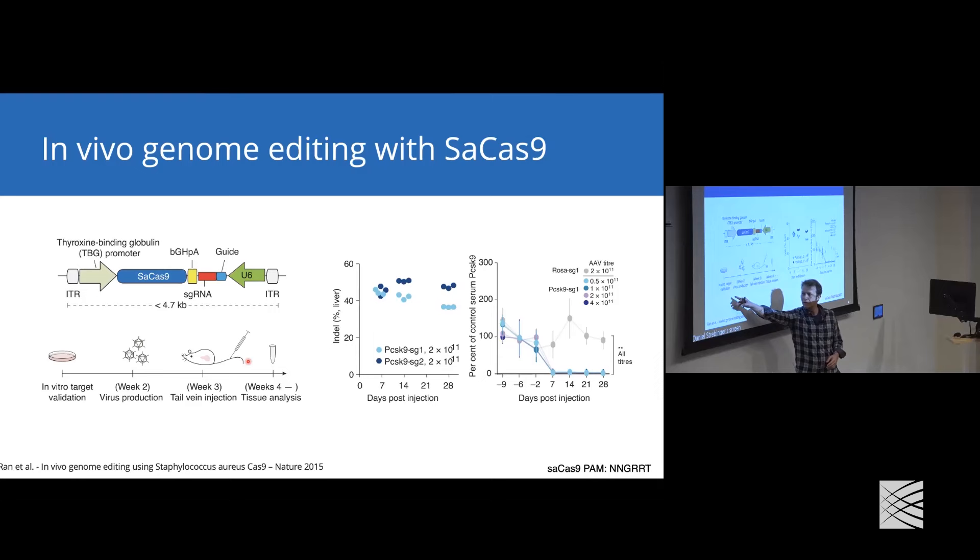People validated that it works in cells in a dish, produced virus targeting the PCSK9 gene in mice, injected this into mice, and analyzed what happened. There's a very high percentage with roughly 50% of indel formation at the PCSK9 locus. A key reason to target PCSK9 is it's a secreted protein, so we can test serum. Do we see a reduction in PCSK9? Indeed, before injection, PCSK9 levels are fairly stable. But shortly after injection of the targeting system, we can see a very strong decrease in PCSK9 production.